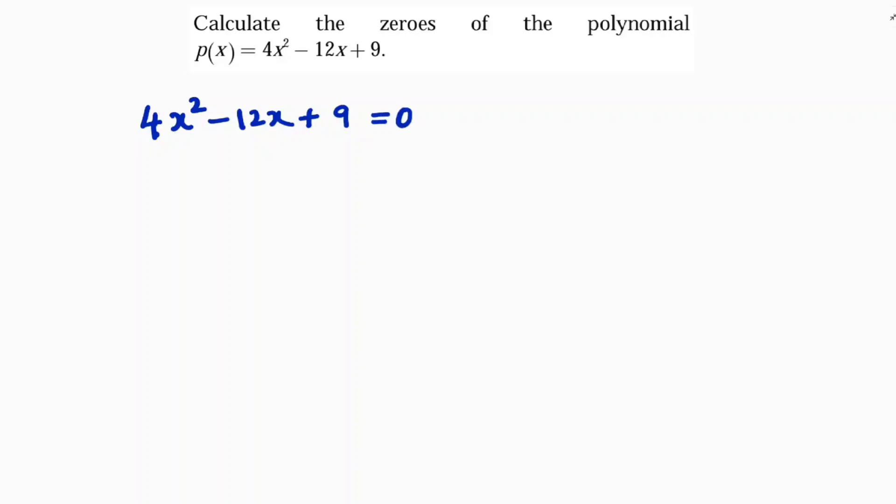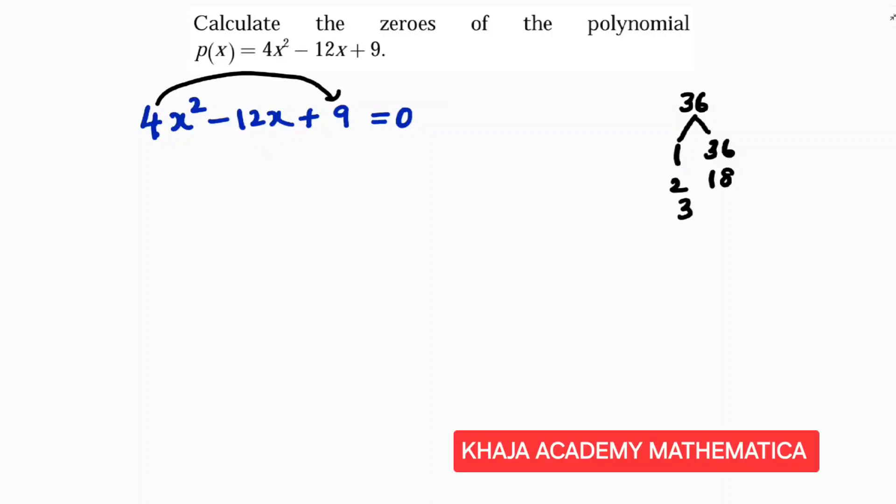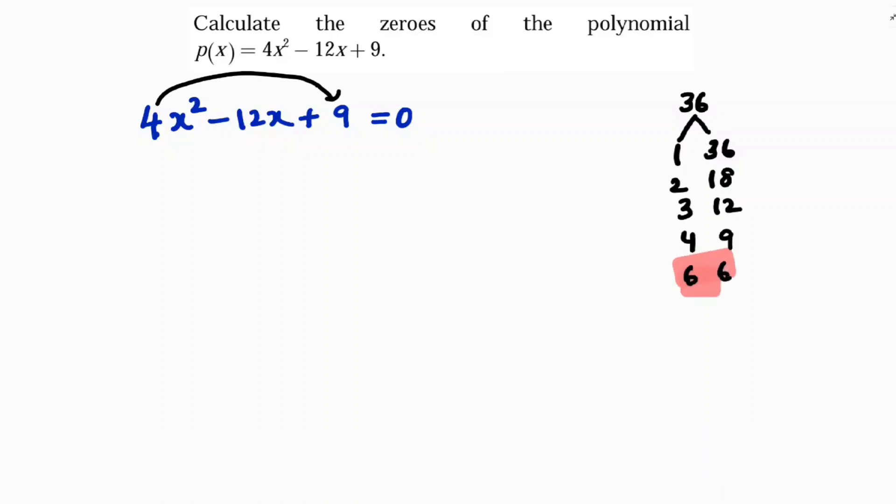Now here 4 times 9 is 36, so I need to find factors of 36: 1 times 36, 2 times 18, 3 times 12, 4 times 9, 6 times 6. So I need 12 over here, so I'll take 6 and 6, I'll take this.